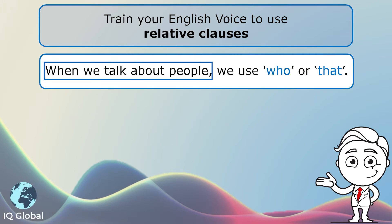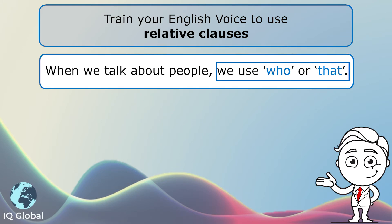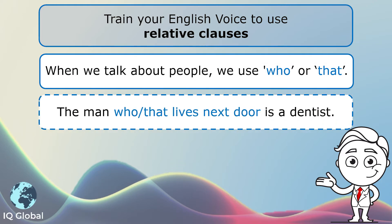When we talk about people, we use who or that. Have a look at sentence one: The man who or that lives next door is a dentist. In this sentence, we are talking about a man, so that is a person, and we can use the word who or that. Both words are correct.